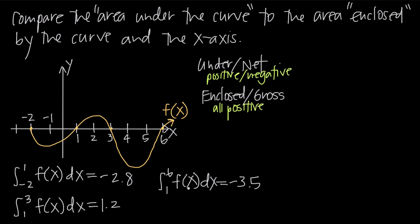Here's what that looks like with the information we've been given. We have this curve graphed in orange — it's f(x), defined on the interval x = -2 to x = 6. We've also been given three pieces of information. The integral of f(x) from -2 to 1 is -2.8. Because this is the integral, we're talking about net area, treating area below the x-axis as negative. So the area from -2 to 1 is all below the x-axis, giving a net area of -2.8.